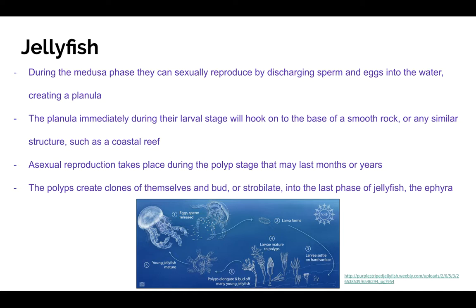A polyp strongly resembles a sea anemone, and during this stage, which may last for a couple of months or upwards of years, asexual reproduction takes place. The polyp creates clones of itself and buds, or strobilates, into the last phase of a jellyfish: the ephyra. It is this structure that develops into the adult medusa jellyfish. The diagram below shows two adult medusa jellyfish releasing sperm and egg that form into their larvae, the larvae attaching to a hard surface, the larvae maturing into polyps, the polyps budding off, becoming ephyra, and the ephyra eventually maturing into a jellyfish.